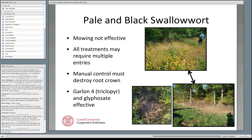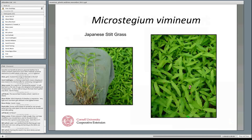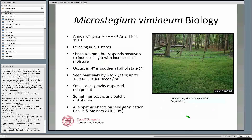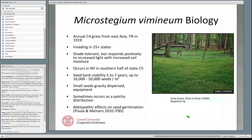Japanese stiltgrass — Microstegium vimineum — is one of the new species I've added. This Asiatic species can very aggressively dominate an area. It's more aggressive and out-competes garlic mustard — recent research suggests that where these two species co-occur, Japanese stiltgrass is likely to win out. An important note is that the seeds tend to be small and reportedly gravity-dispersed, which gives us some clues about how we want to try to manage it.